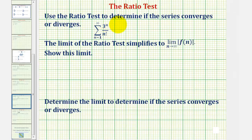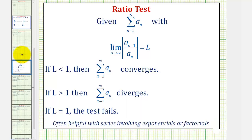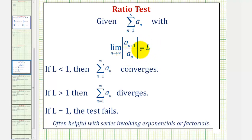We want to use the ratio test to determine if the infinite series converges or diverges. To apply the ratio test, we have the summation of a sub n, and then we find the limit as n approaches infinity of the absolute value of a sub n plus one divided by a sub n, which is equal to L.